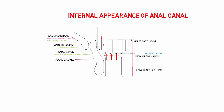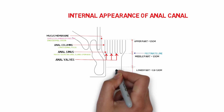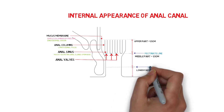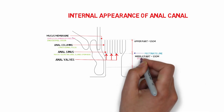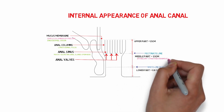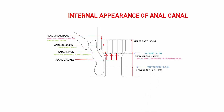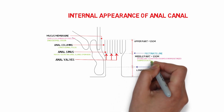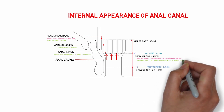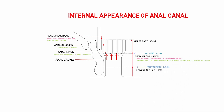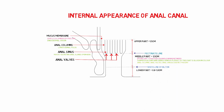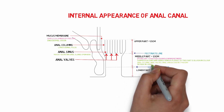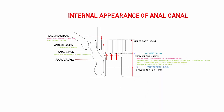The lower end of the middle part is whitish, so the line demarcating the middle part and the lower part is known as the white line of Hilton. The middle part is covered by stratified squamous non-keratinized epithelium, and the submucosa contains a dense venous plexus, making this part bluish in color. Anal columns, anal valves, and anal sinuses are present here, but hair, sebaceous, and sweat glands are absent.